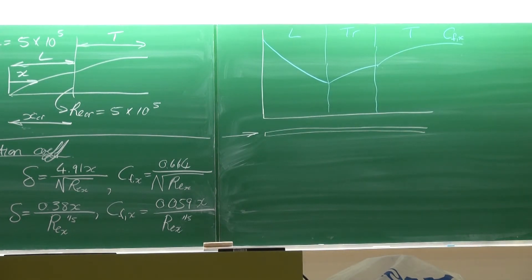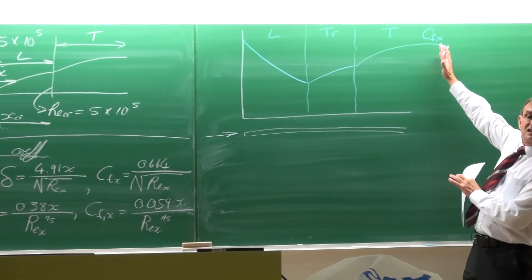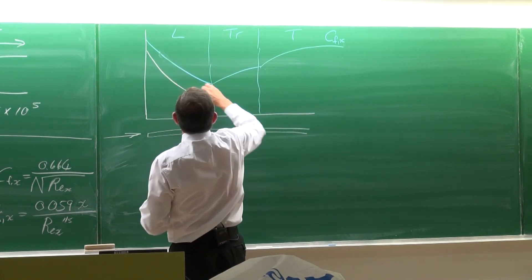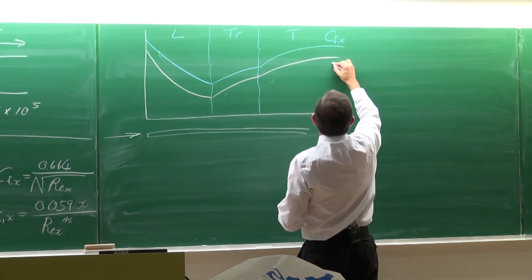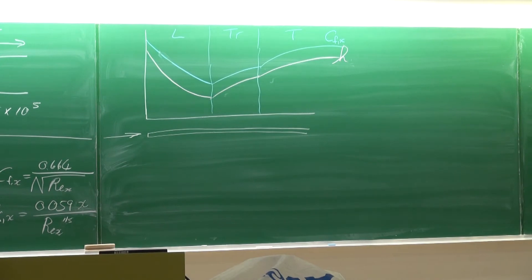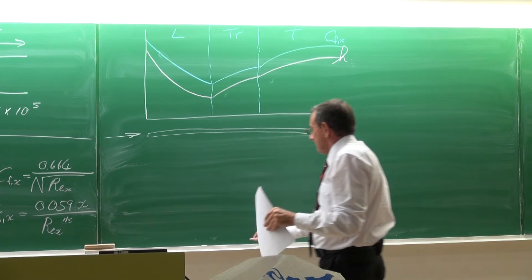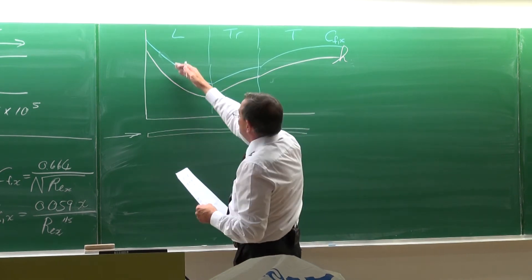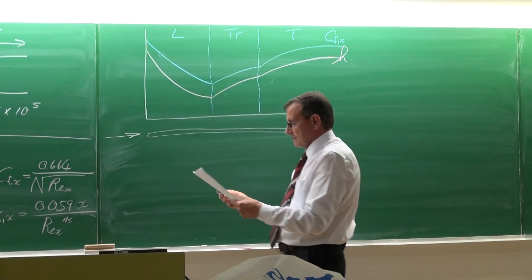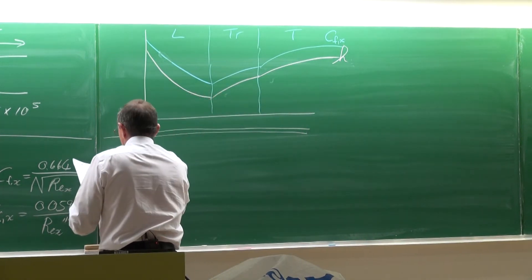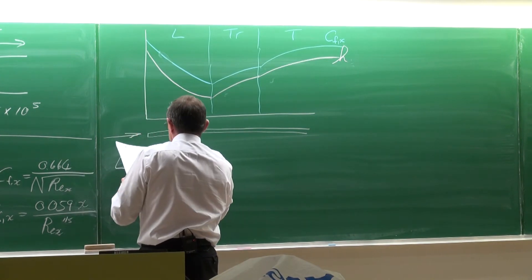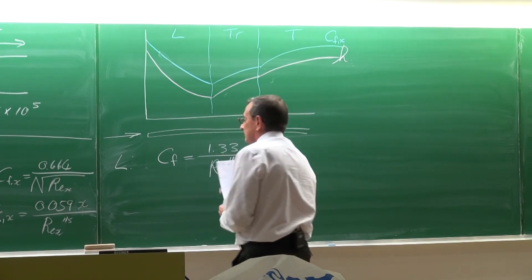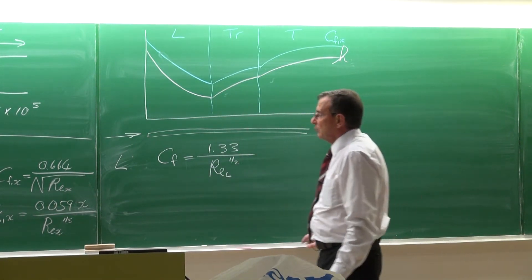The very beautiful thing in nature is that if we plot the local heat transfer coefficients, the graphs would behave exactly the same as the CF_x graph. The magnitudes would not be the same, but the tendencies would be exactly the same.